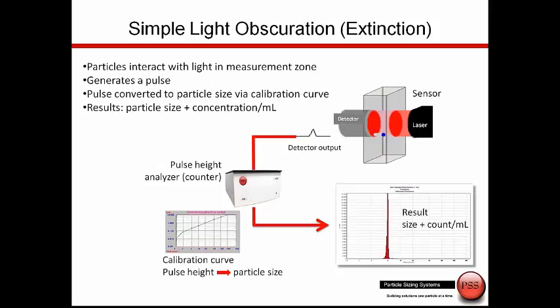This shows a basic operation of light obscuration or light extinction sensor. As a particle passes through the light source, it generates a pulse. The height of this pulse is proportional to the size of the particles. The detector output is fed to a pulse height analyzer, the counter.